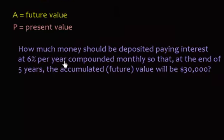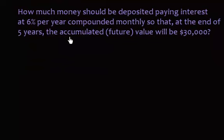So we have the following question: how much money should be deposited in a bank account today, paying interest at 6% per year, compounded monthly, so that at the end of five years, the accumulated or future value will be $30,000?